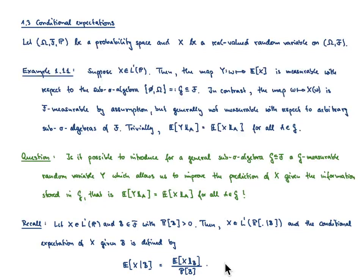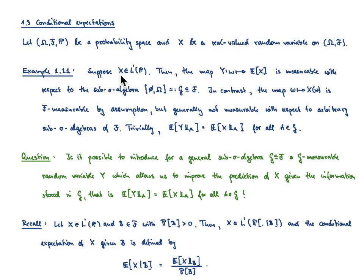Let's start rather simple. For a probability space (Ω, F, P), I would like to consider a real-valued random variable X defined on (Ω, F, P), meaning that the random variable is measurable with respect to F and the Borel sigma-algebra. What conditional expectations are about is the following: assume that the random variable X is integrable. We can compute its expectation, and we know this expectation is some real value, some number.